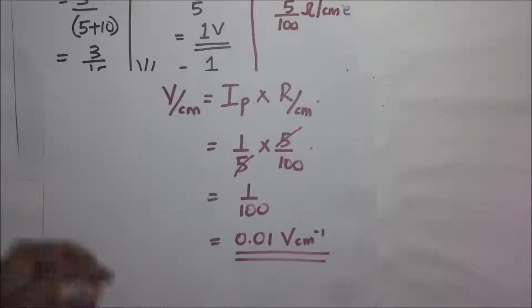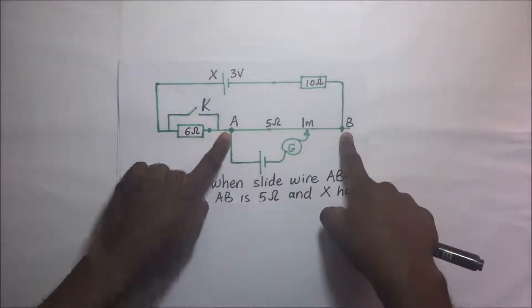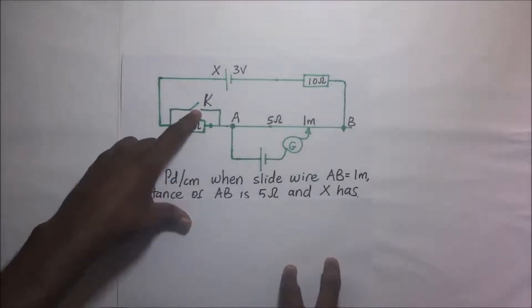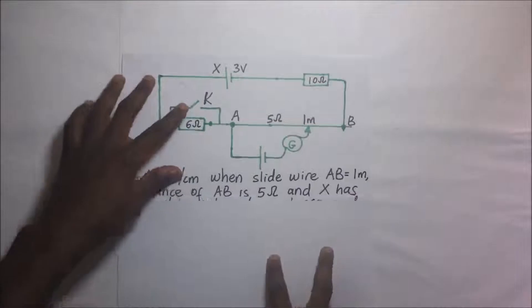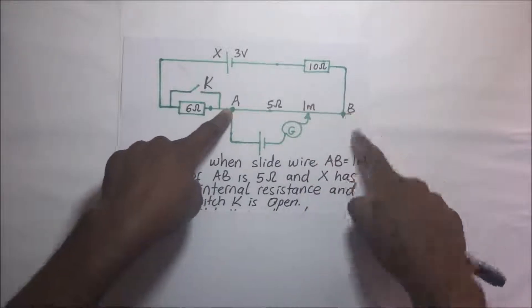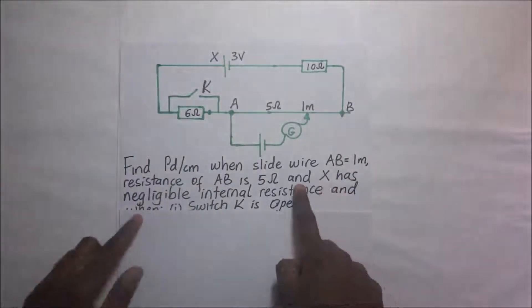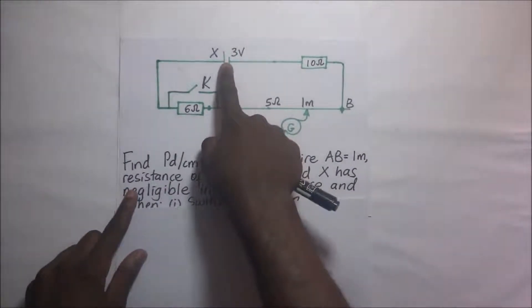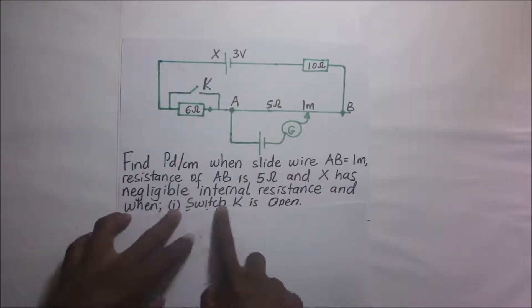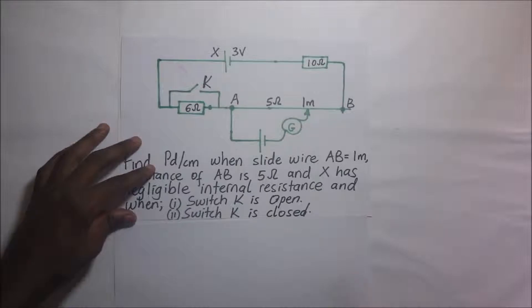Let's take this another notch higher. Again, we are being asked to find the PD per unit length of wire AB, but now we have a switch K in the circuit, a 6-ohm resistor, and a 10-ohm resistor. The question tells us: find the PD per unit length when wire AB is 1 meter long and has a resistance of 5 ohms, cell X has a negligible internal resistance, and we need to find the PD per unit length when switch K is open and when switch K is closed.